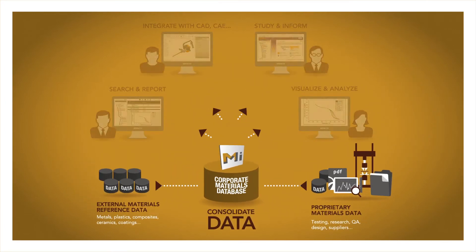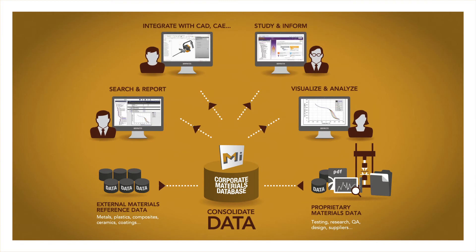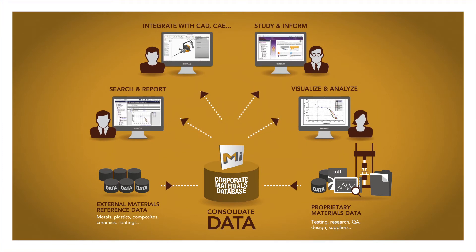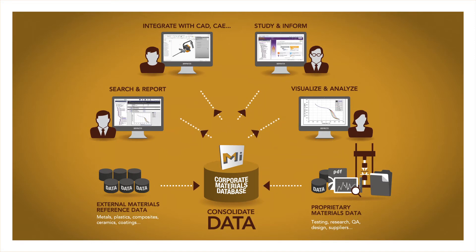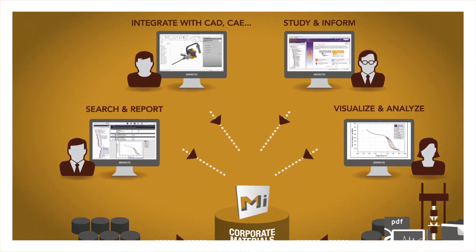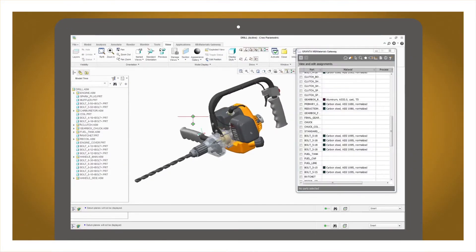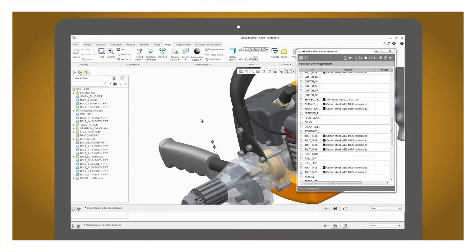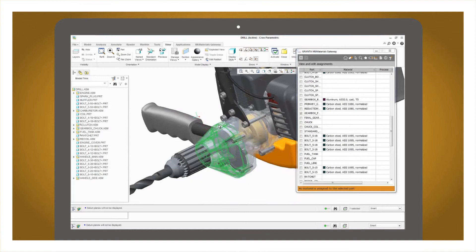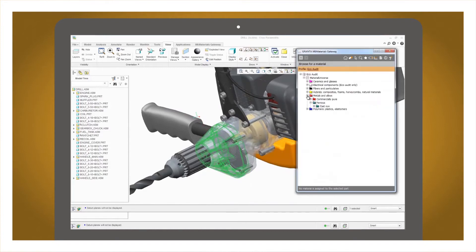Granta MI captures all of a company's materials data in one place, manages it so it's accurate, secure and traceable, and shares it when, where and in the format in which it's needed. Granta MI even embeds applications within other standard engineering software, like CAD, CAE, or PLM.